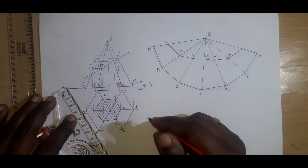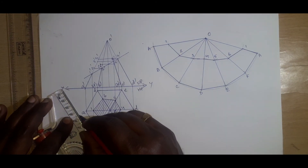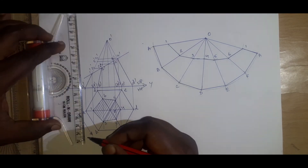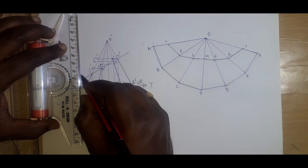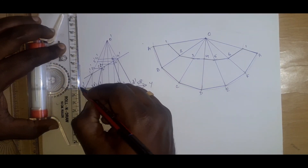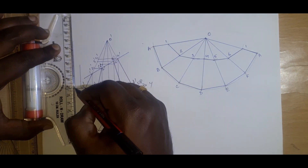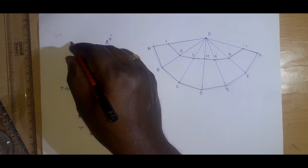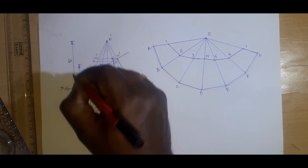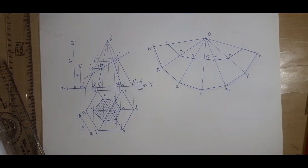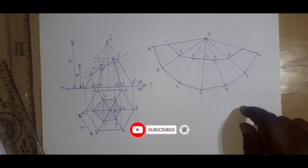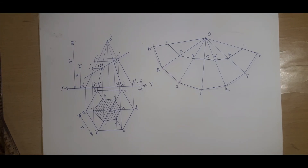Add the dimensions: the base side is 30mm, the axis height is 60mm, and the axis bisect point is 30mm. Write the title as 'Lateral Surface Development' with all dimensions in mm. This is the way of completing the drawing. Thank you.